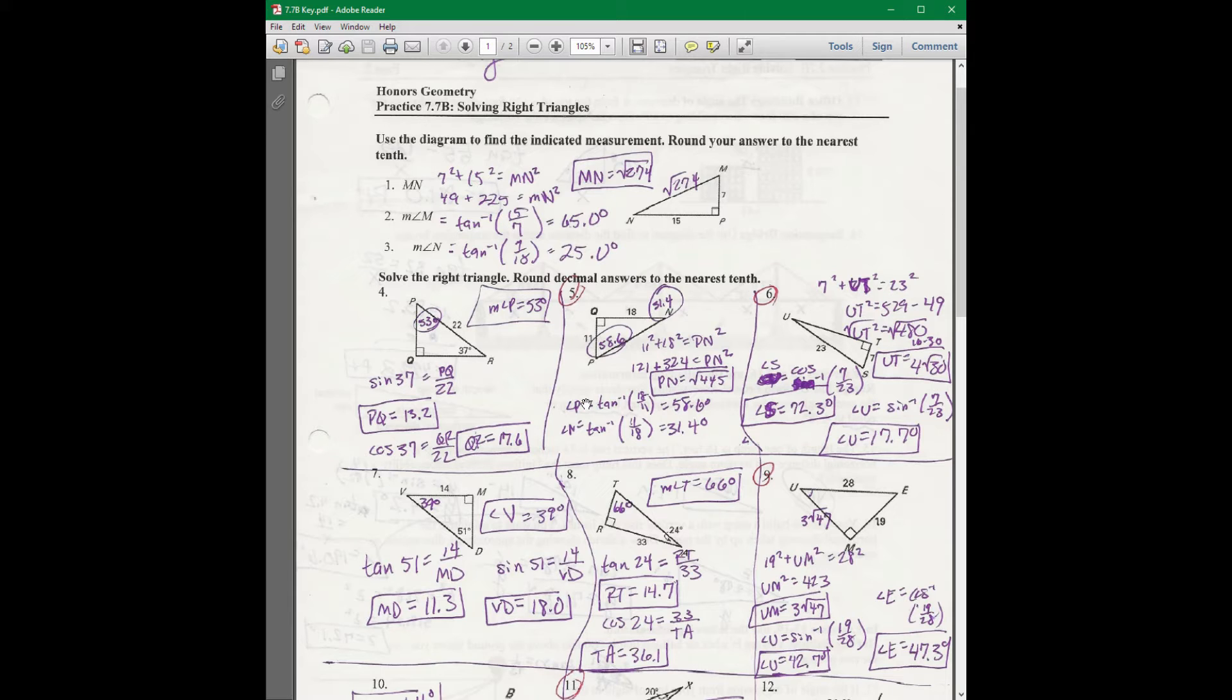So, I would say tan of P equals 18 over 11. Take the inverse tan of both sides. And then you can either do 90 minus 58.6 or go to the other angle and say opposite over adjacent, so the inverse tan of 11 over 18 is 31.4.